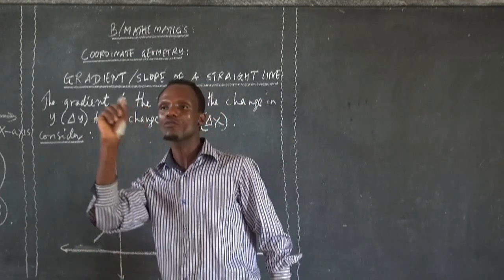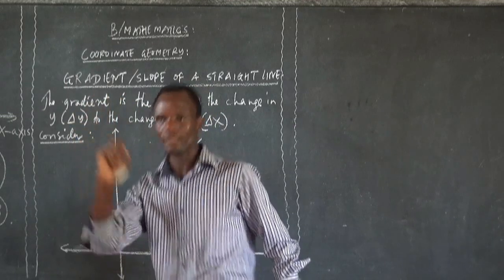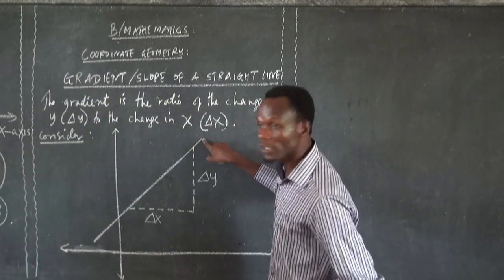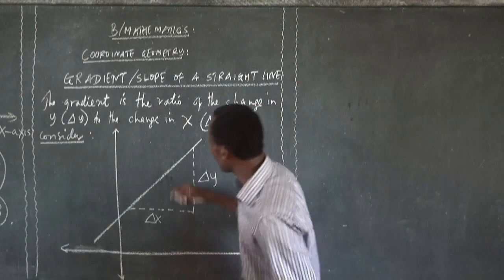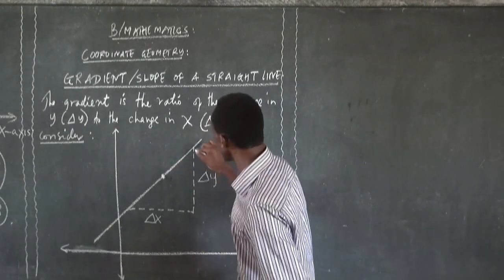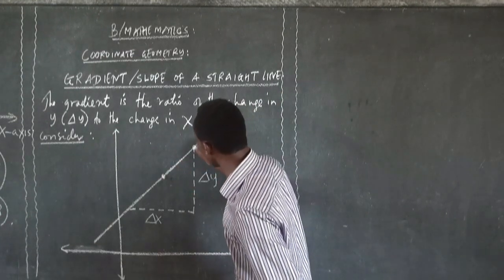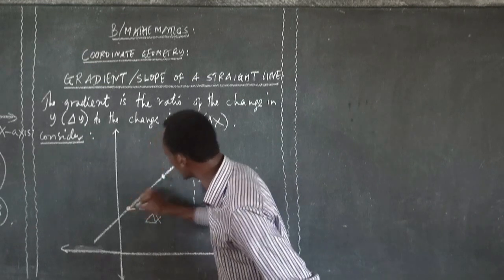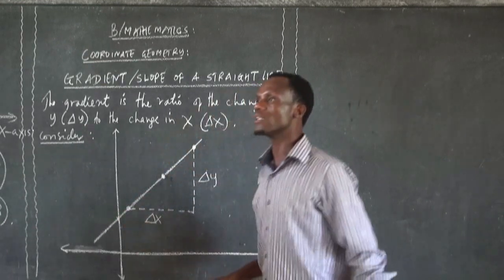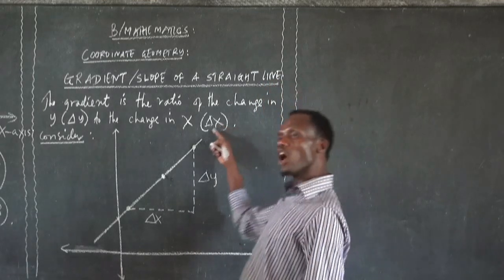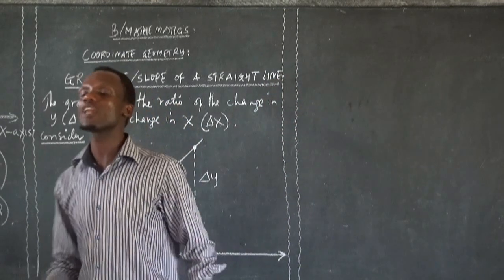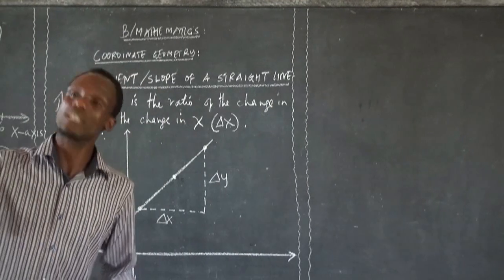This is a straight line I've drawn here. It has several points — maybe the first point was here, then another point here, another here, another here, another there. Joining those points, you form what we call a straight line.